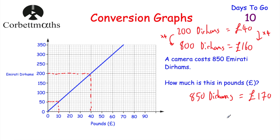Well done if you got that! There were other approaches too — for example, reading that 100 dirhams is 20 pounds, multiplying by 8 to get 800 dirhams equals 160 pounds, then adding 50 dirhams equals 10 pounds to get 170 pounds.